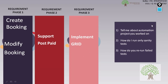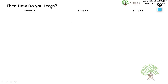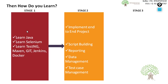So if you understand the problem, the question which arises is: what do you need to learn and how — in which direction? Now there are three stages of learning this tool. The first two stages are easy. In stage one, you just have to learn about Java, Selenium, TestNG, Maven, Git, Jenkins, and other things.